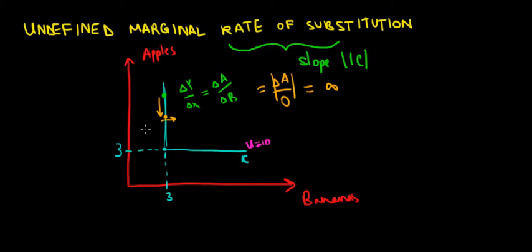Now let's have a look on this part of the graph. What would happen here? What if we want to go from this level of, let's say, four bananas to five bananas? How many apples are we willing to give up?